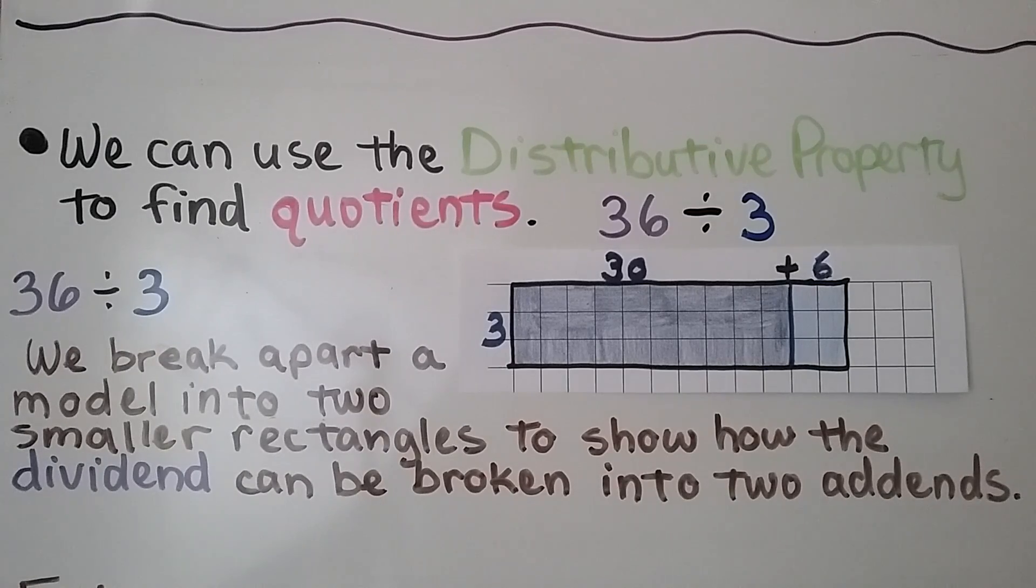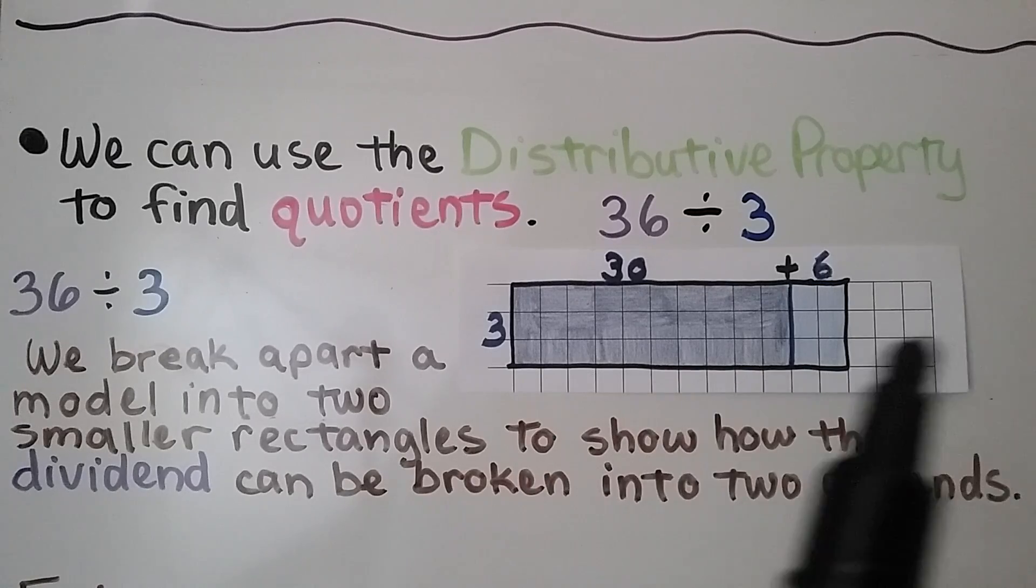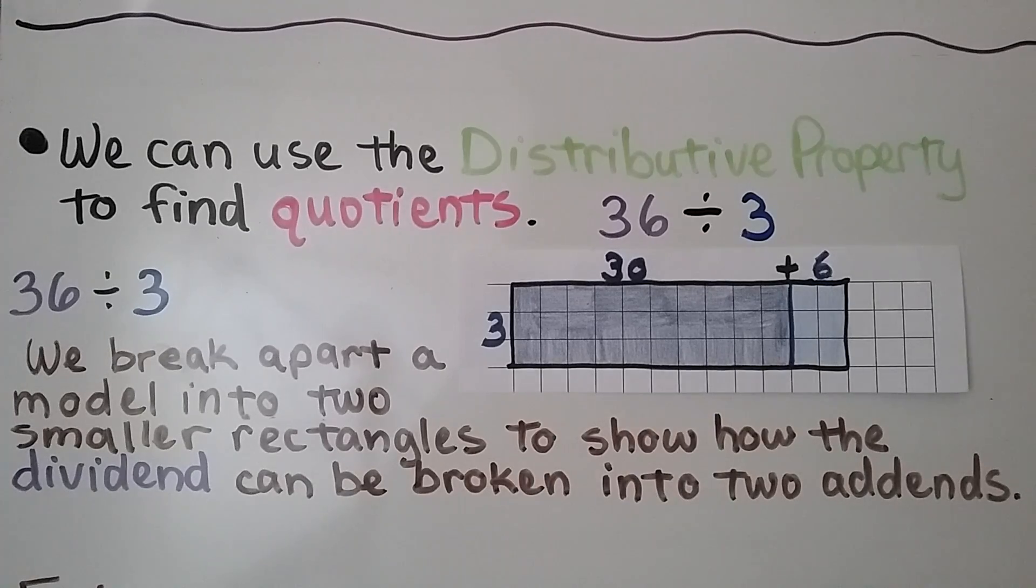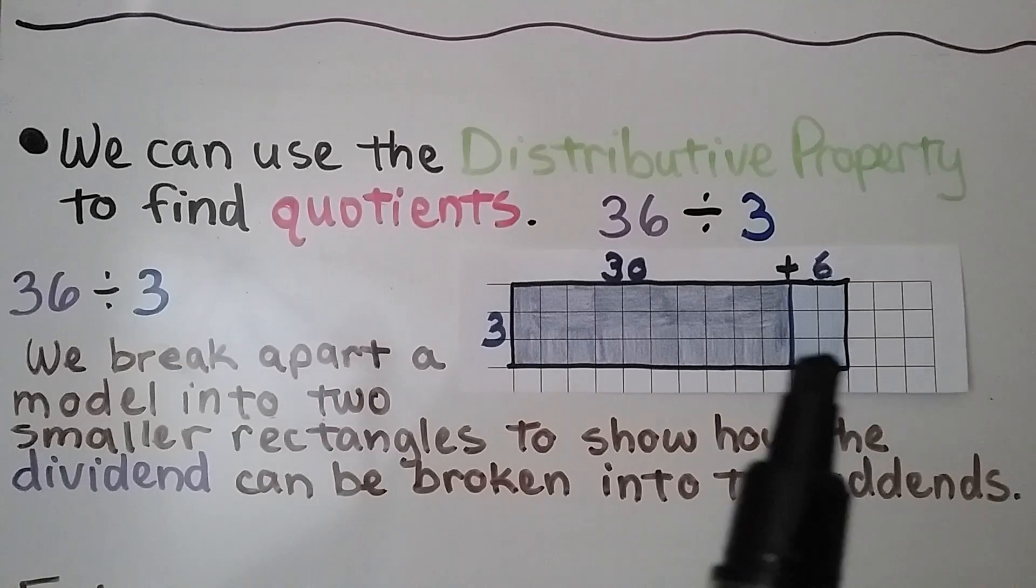We have 36 divided by 3. We break apart a model into two smaller rectangles to show how the dividend, this 36, can be broken into two addends. We can do 30 plus 6.